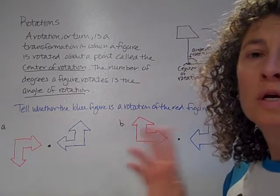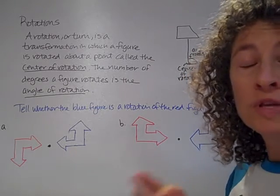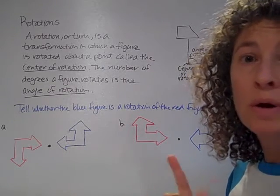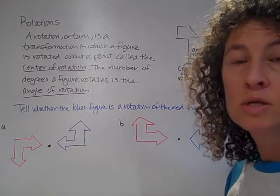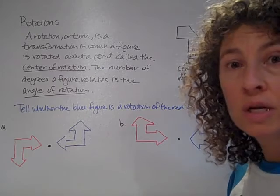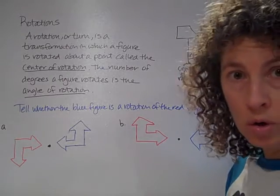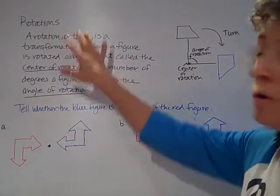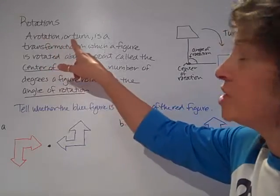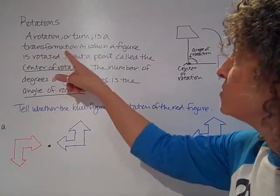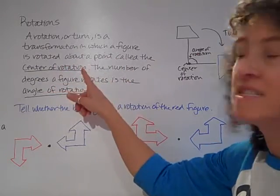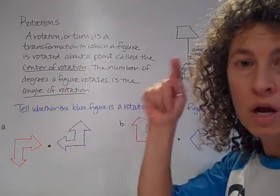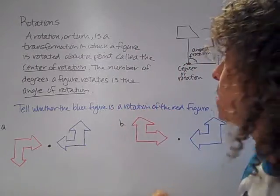And we're going to talk about three things when we talk about rotations. We're going to talk about where the center point is of rotations. We're going to talk about which direction and how far we're going to be rotating. So a rotation or a turn is a transformation in which a figure is rotated about a point called the center of rotation. So that's where, if we put our finger and hold it, that's what it rotates around.